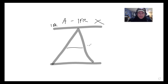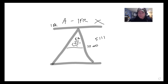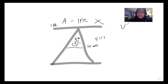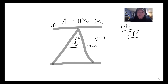Above 10,000 feet in Echo or Golf, it's 5-1-1-1: 5 miles of visibility, 1,000 feet below the clouds, 1,000 feet above the clouds, and 1 mile of horizontal separation from clouds. We're talking about visibility and cloud clearance requirements in different types of airspace. Above 10,000 feet in Echo or Golf: 5 miles of visibility, 1,000 feet below, 1,000 feet above, and 1 mile of horizontal separation from clouds.